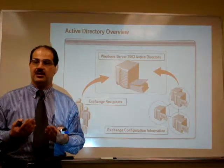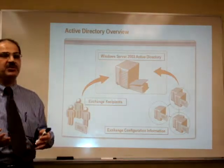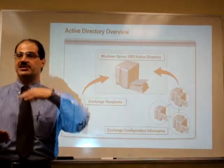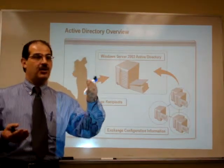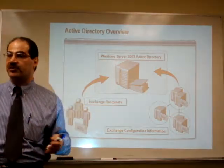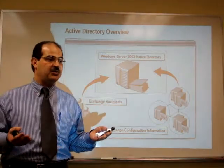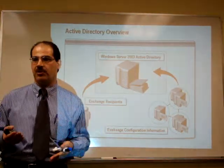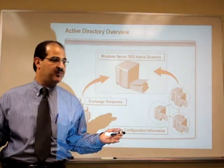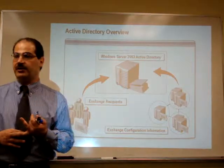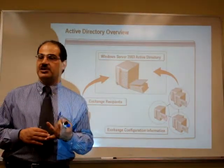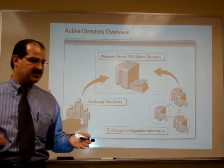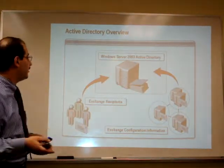Exchange uses these two servers for internal communication. Next, we're going to talk about external communication. For example, if you have a router, you have to configure it to allow Exchange to send mail outside. Or if you have a firewall, you have to open a port for Exchange to send email outside or to accept email from outside. Exchange uses two very common protocols: POP3 and SMTP. Exchange uses POP3 for receiving mail and SMTP for sending mail.